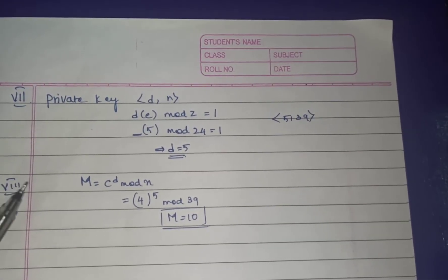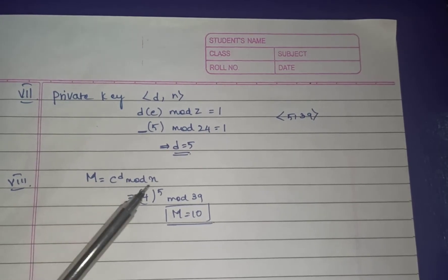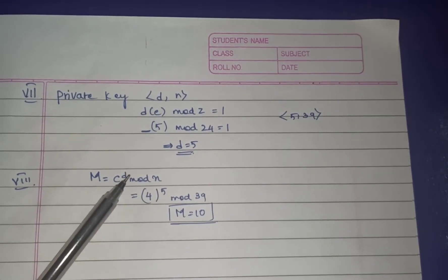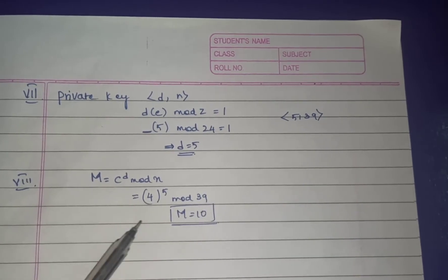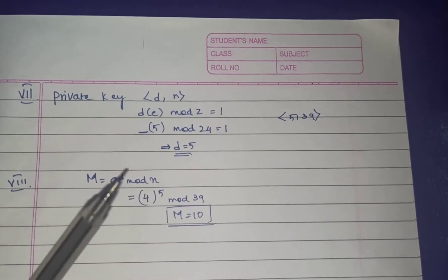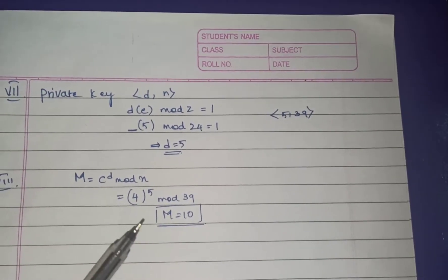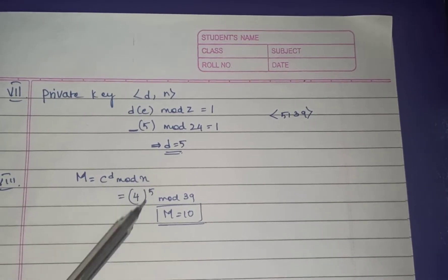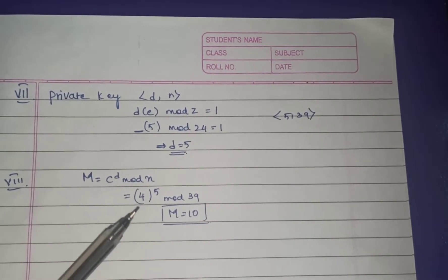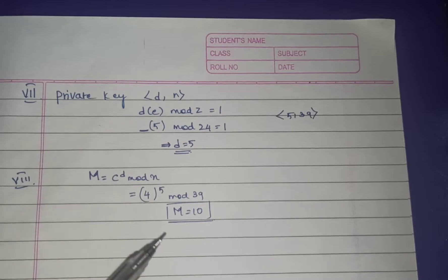Finally, recover the plain text: m = c^d mod n. Substituting c = 4, d = 5, n = 39, you get back m = 10, which was the original message sent by the sender. The receiver successfully recovers the original message.